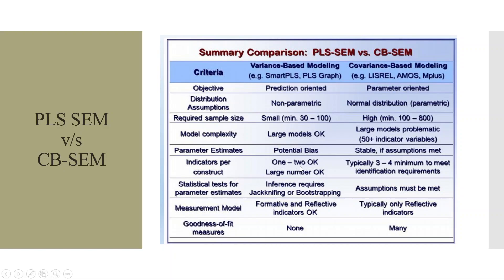Indicators per construct: one or two can work in variance-based modeling, and a large number is acceptable. In covariance-based SEM, each construct should have a minimum of three to four indicators — fewer can create a problem of degrees of freedom. Statistical test for parameter estimates: variance-based modeling requires jackknifing or bootstrapping, while covariance-based does not necessarily require this. The measurement model: variance-based SEM can work on both formative and reflective indicators, while covariance-based SEM can only work on reflective indicators. Goodness of fit: variance-based modeling has none, while covariance-based has many.